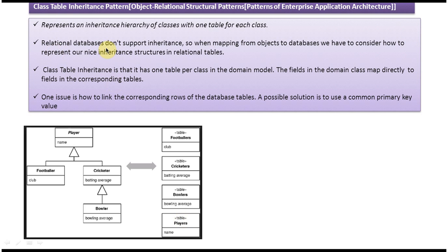Relational databases don't support inheritance, so when mapping from objects to databases we have to consider how to represent our inheritance structure in relational tables. Using class table inheritance, we can represent this with one table per class in the domain model.